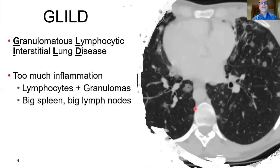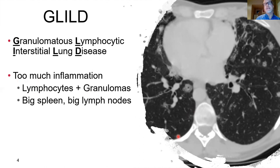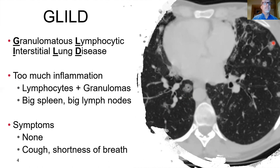Granulomatous lymphocytic interstitial lung disease, or GLILD, is another condition that may commonly be seen in CVID. It is characterized by too much inflammation in the lung, where you can get aggregates of lymphocytes infiltrating into the lung tissue and granulomas — inflammatory masses that can be seen in the lung. Patients may develop this without symptoms initially, and it's recommended that patients with CVID be screened with periodic CT scanning. As symptoms develop, patients frequently experience cough and, as it progresses, shortness of breath.